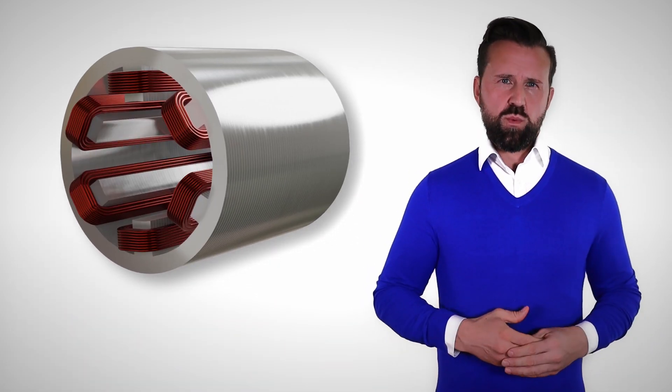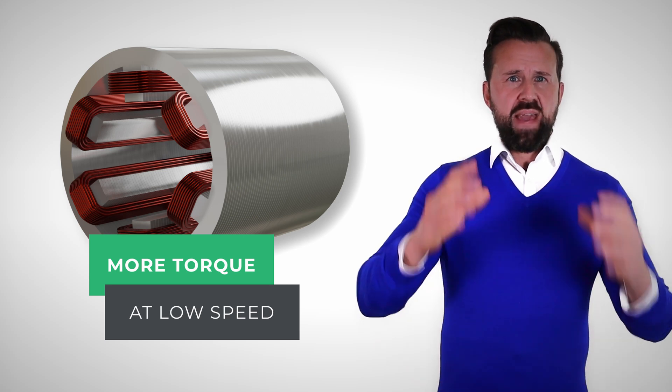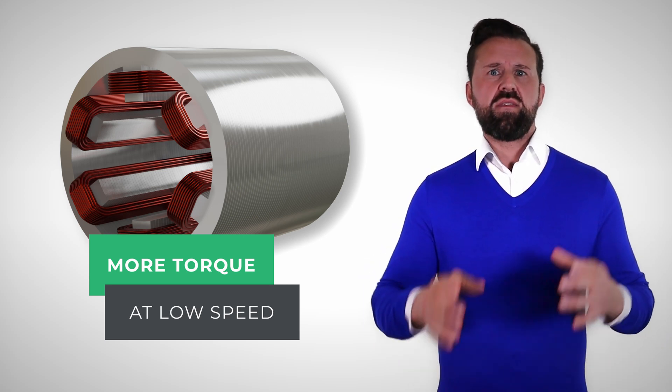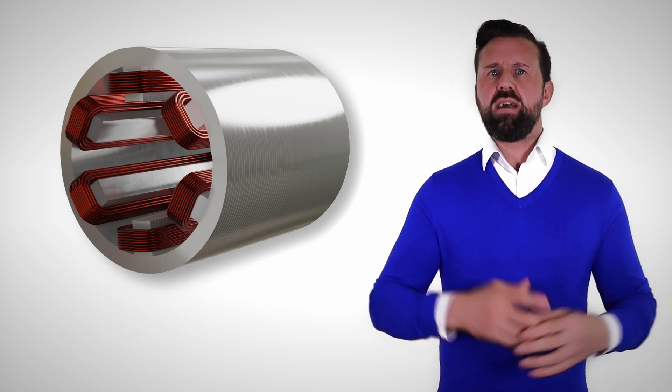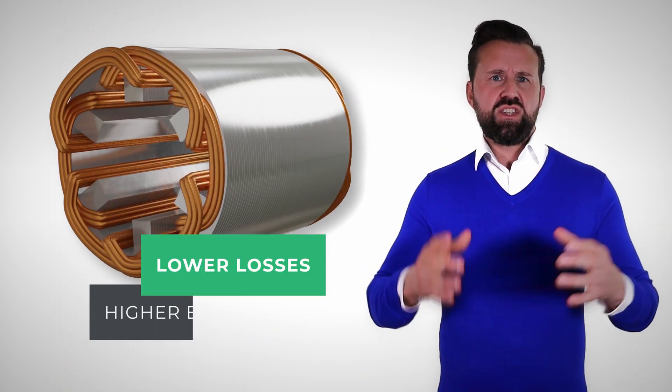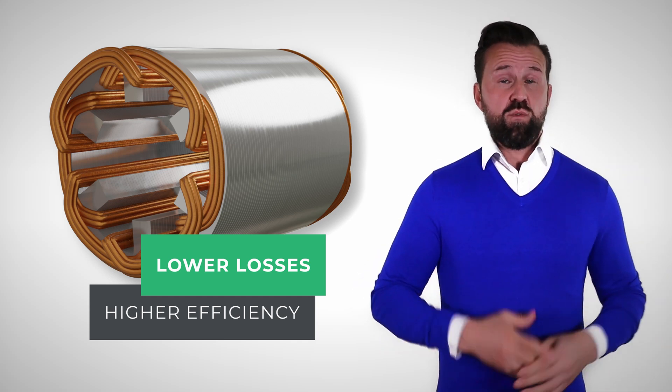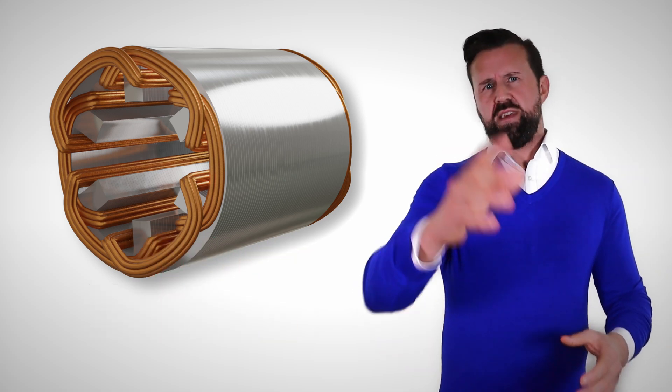A motor with a concentrated winding can generate more torque due to the trapezoid back EMF. However, the losses in the copper and the sheet metal are bigger, because there are more and higher harmonics. With the distributed winding, you can achieve a higher efficiency due to the sine wave back EMF, which is very important for electric vehicles.